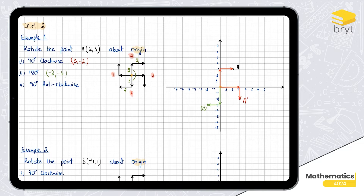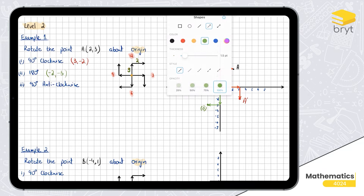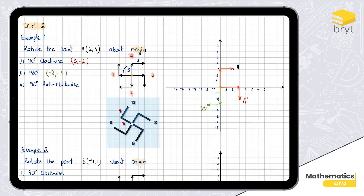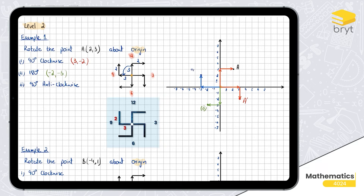Now part three: we rotate 90 degrees anti-clockwise. Switching to blue. We have three units up and two units to the right. Rotating 90 degrees anti-clockwise means this spins the other way — the image is going to be three units to the left and two up. From the center, three to the left and two up — and there's the answer to part three.